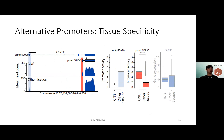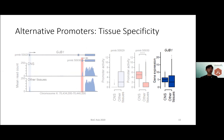Another interesting finding was tissue-specific use of alternative promoters that regulate the use of distinct isoforms. The GGB1 gene is an example of this. The figure on the left shows the average read count for the gene locus in central nervous system tissue compared to all other tissues. GGB1 gene has two alternative promoters, highlighted in light blue and red. The first promoter highlighted in light blue is deregulated in CNS tissues exclusively, while the second promoter highlighted in red is active in CNS tissue but not active at all in other tissues. Interestingly, when we look at overall gene expression between CNS and other tissues, we don't see a significant difference, demonstrating tissue-specific use of alternative promoters.